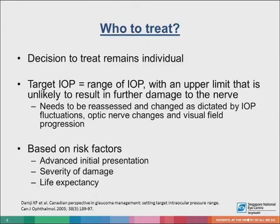The glaucoma community then realized that not all glaucomas are alike, and despite low IOPs, some patients continued to have progressive optic nerve damage. The concept of target IOP was conceived, which highlighted that treatment should therefore be individualized. This refers to a range of IOP where the upper limit is unlikely to result in further damage to the optic nerve.